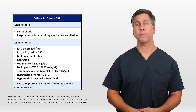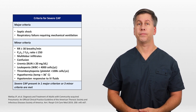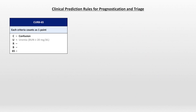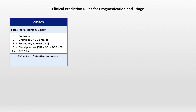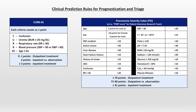In addition to the severe CAP criteria, there are two clinical prediction rules that are frequently used for prognostication and triage. The simpler one is called CURB-65, which is an acronym: C for confusion, U for uremia, R for respiratory rate, B for blood pressure meaning hypotension, and patient age of 65 or more. In its common use, a patient with zero to one of these points is treated as an outpatient. With two points, they are either admitted to an inpatient unit or to an observation unit, and anyone with three or more points is admitted to inpatient. The other clinical prediction rule is called the Pneumonia Severity Index, or PSI. You may still hear some older physicians refer to this as the PORT score for Patient Outcomes Research Team.